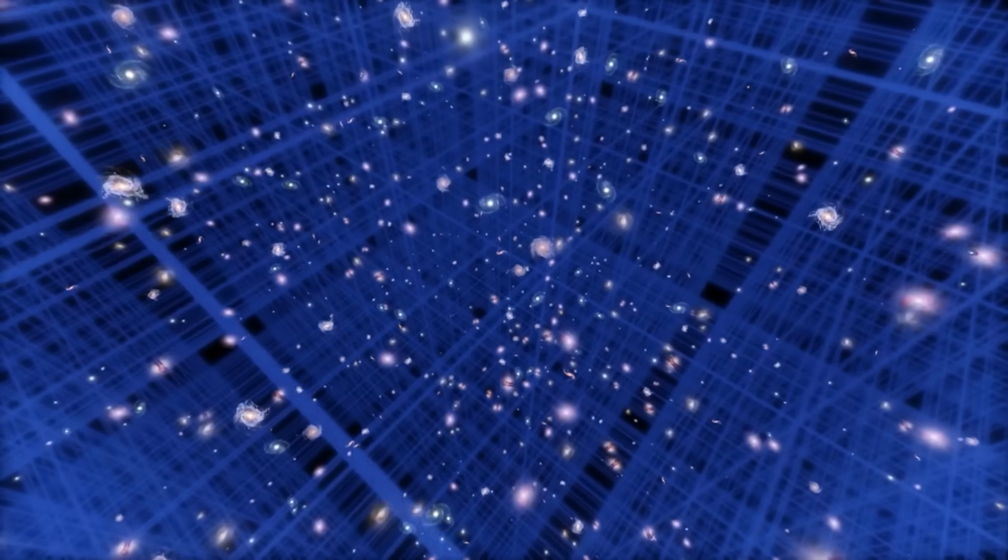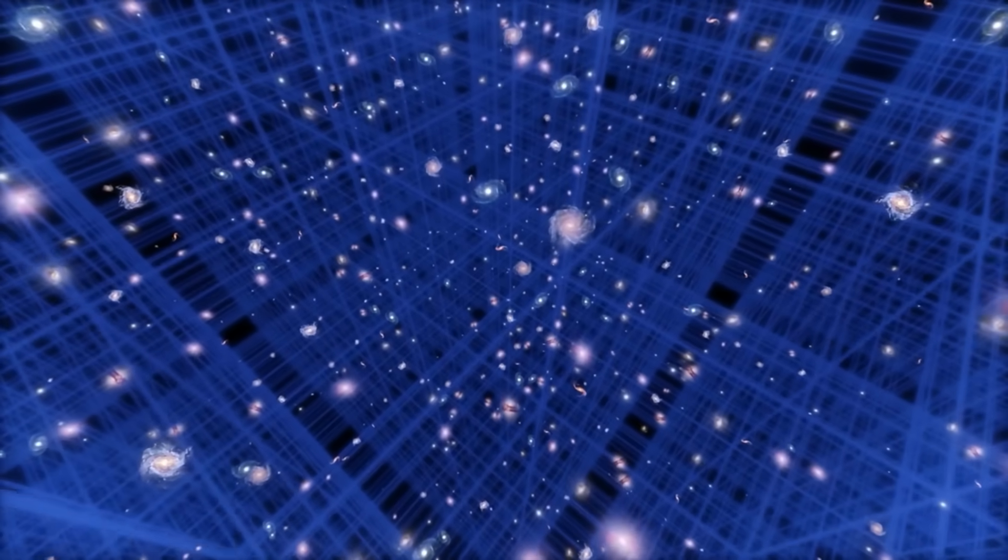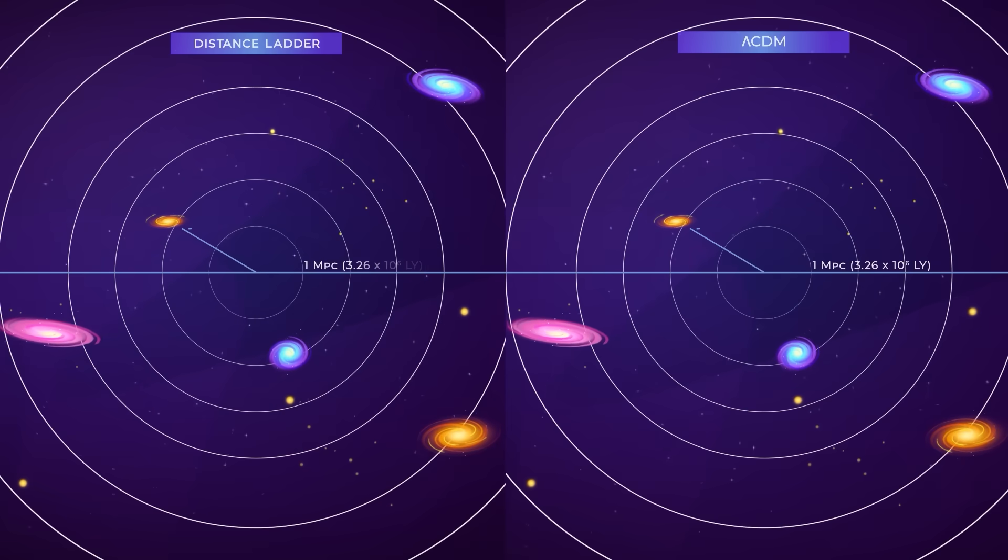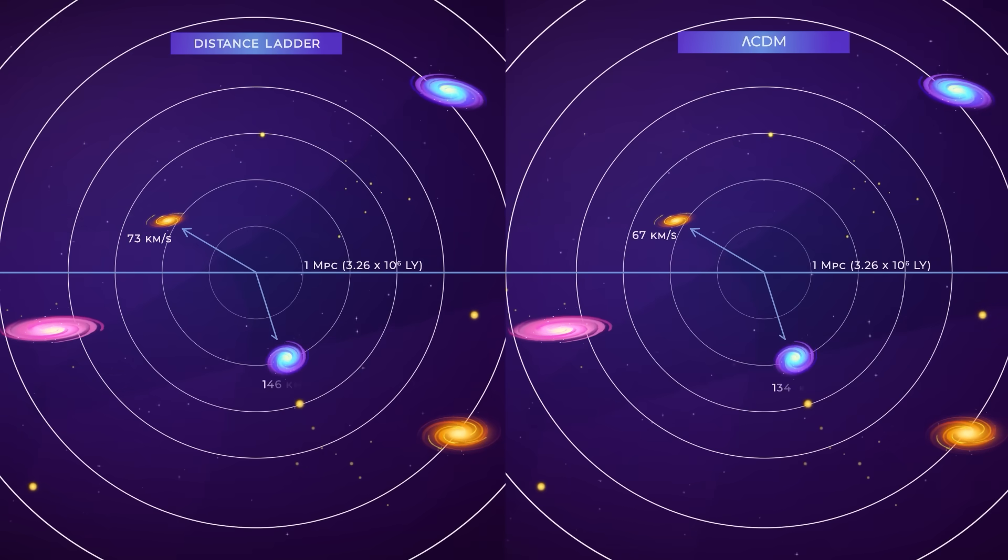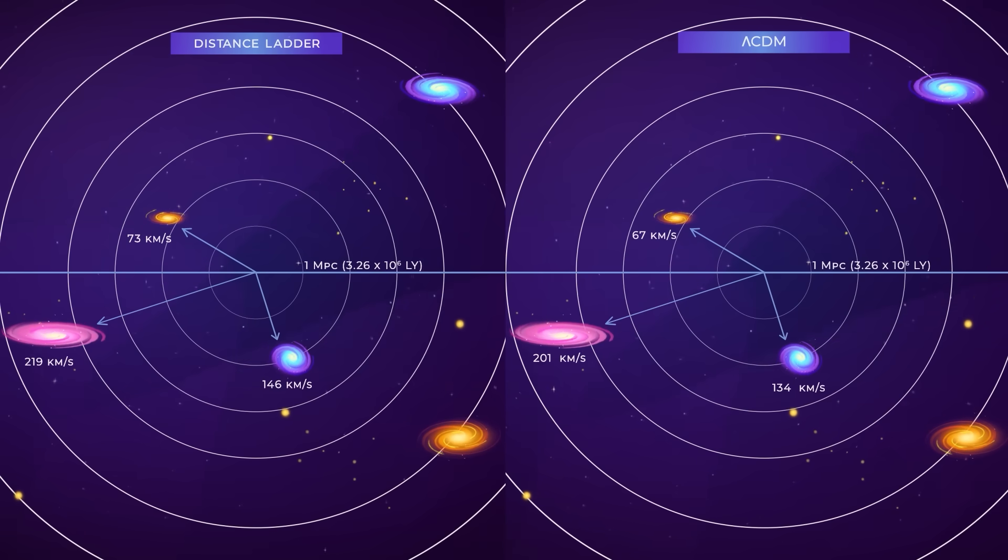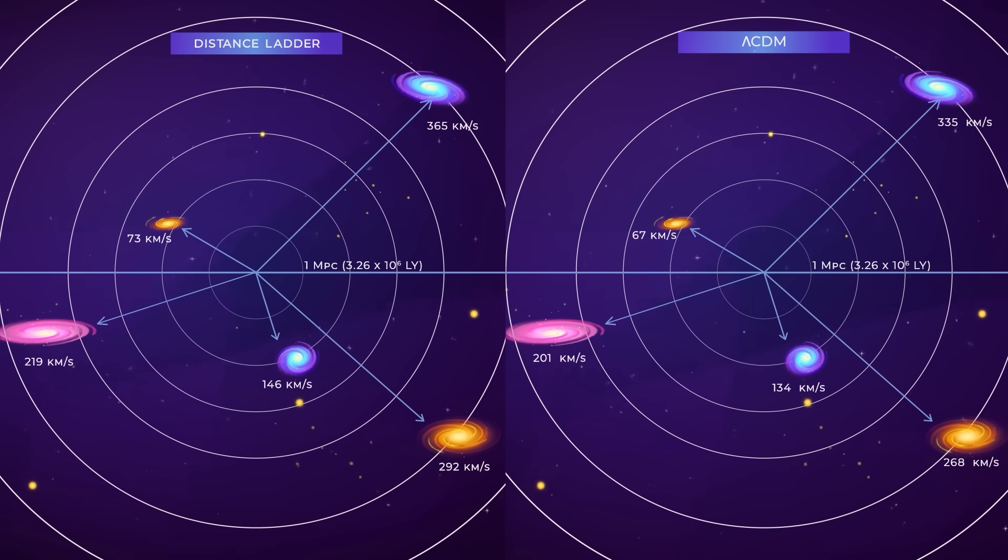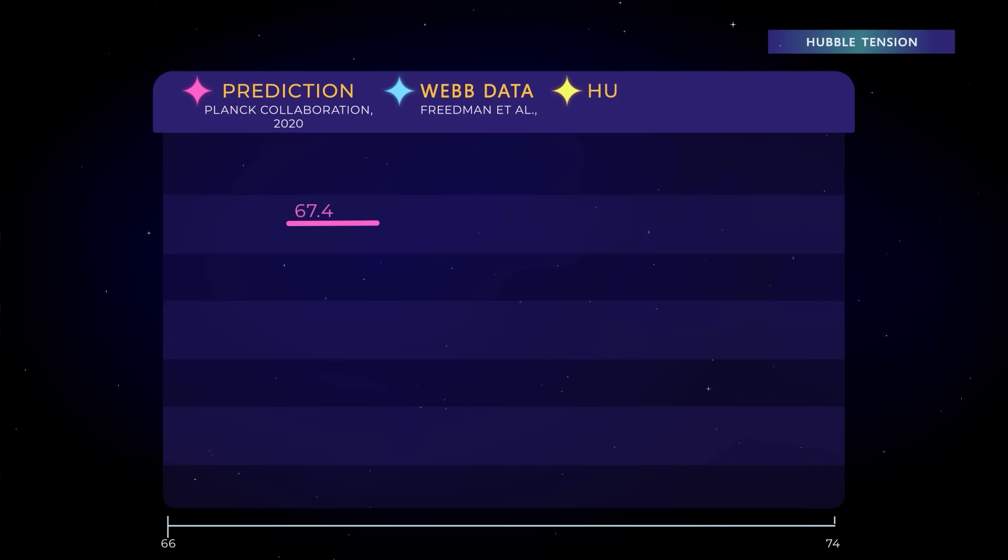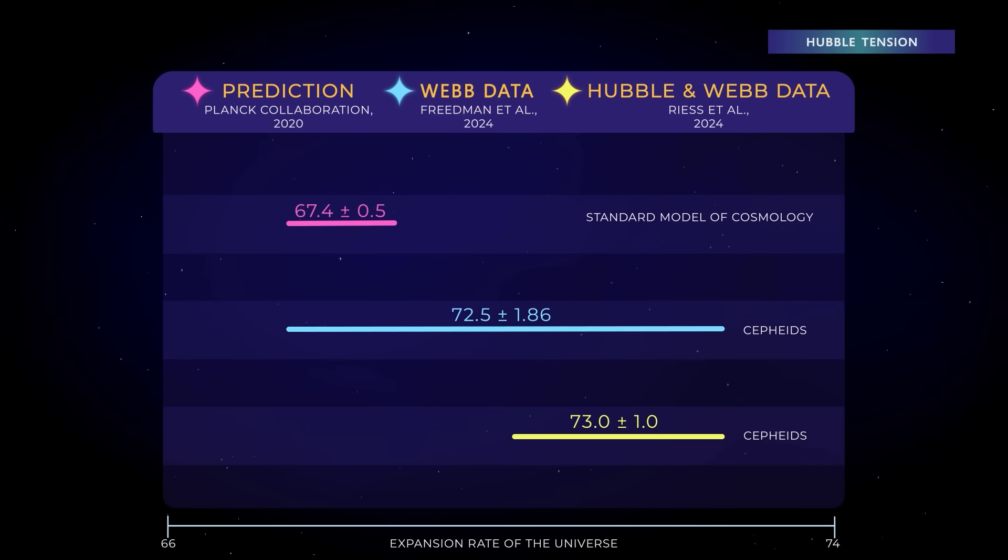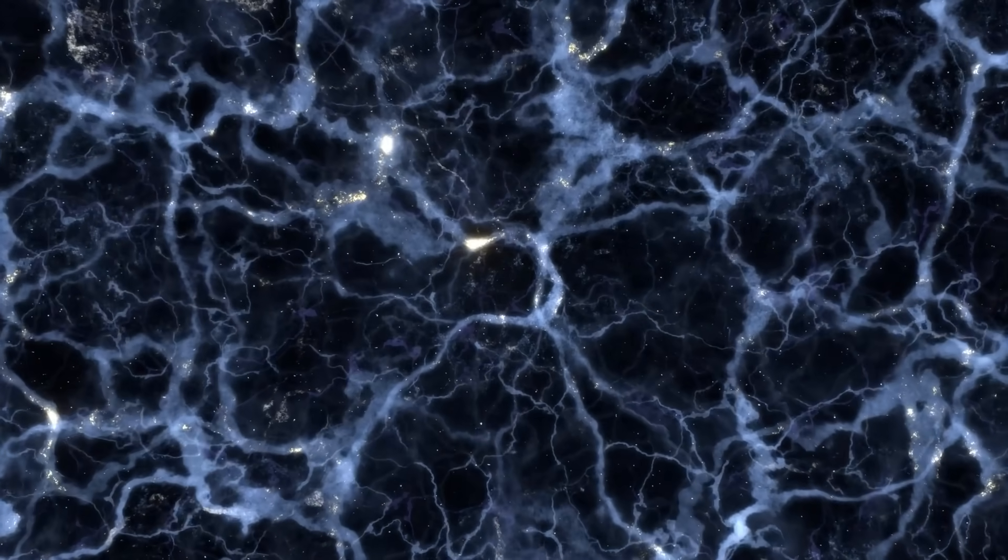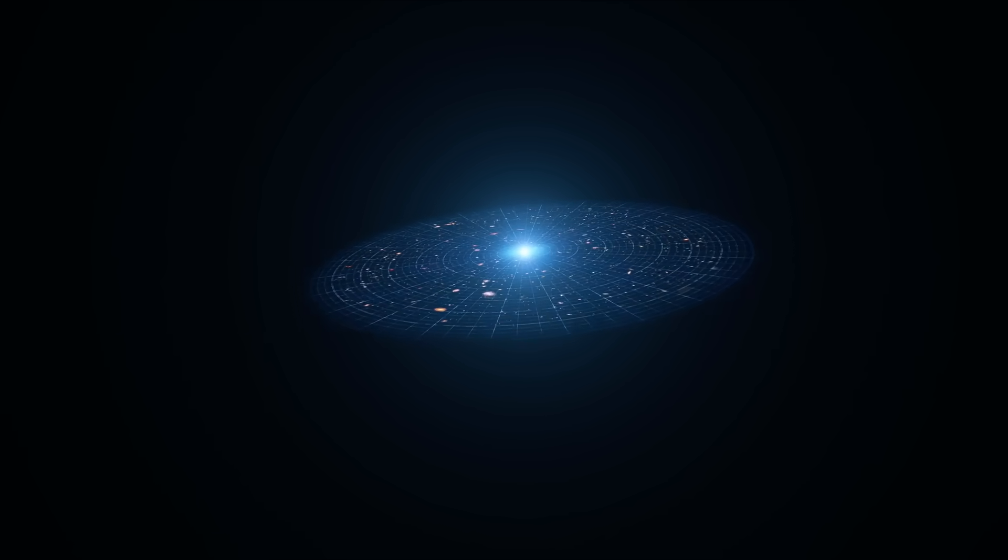Why does this matter? Because it affects how we measure the Hubble constant, the value that tells us how fast the universe is expanding. Interestingly, when we measure this constant using nearby galaxies, we get one value. But when we look at the early universe using things like the cosmic microwave background, we get a different one. This mismatch is known as the Hubble Tension, one of the biggest crises in cosmology. Some scientists think that huge structures like Queepu might be part of the reason for this mismatch. Their strong gravity messes with galaxy movements, making it harder to get an accurate measure of how fast the universe is growing.